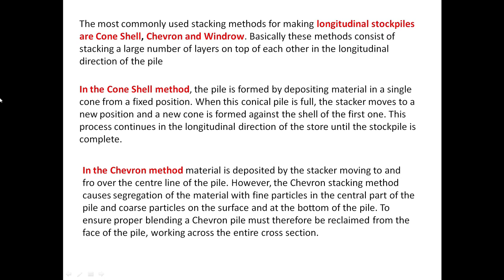In the cone shell method, the pile is formed by depositing material in a single cone from a fixed position. When this conical pile is full, the stacker moves to a new position and a new cone is formed against the shell of the first one. This process continues in the longitudinal direction of the store until the stockpile is completed.